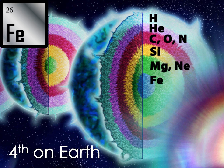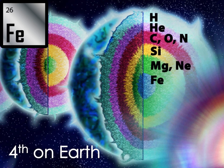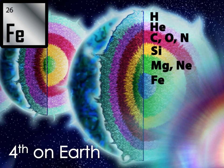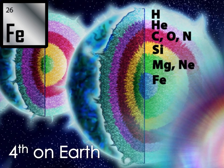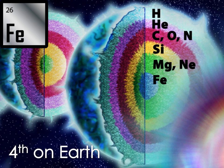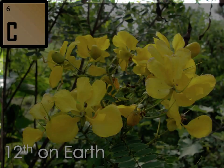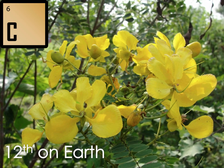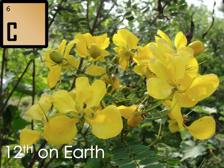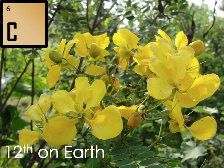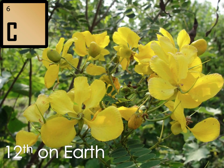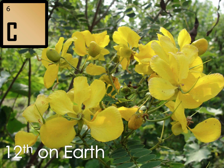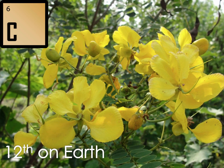Iron is the heaviest element generated by the process of solar fusion, and is the fourth most abundant element by number of atoms on Earth after oxygen, magnesium, and silicon. Carbon is the twelfth most abundant element by this measure, and is easy to find in our organic compounds. This helps make steel inexpensive to produce, being an alloy of two of the most common elements on Earth.